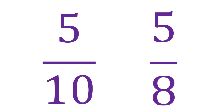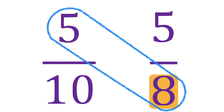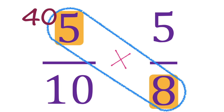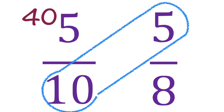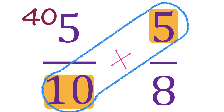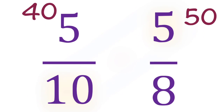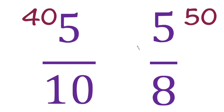How about this one? 5 tenths and 5 eighths. Let's multiply. 8 times 5 equals 40. How about 10 times 5 equals 50. So, what is the answer? It's less than because 40 is smaller than 50.